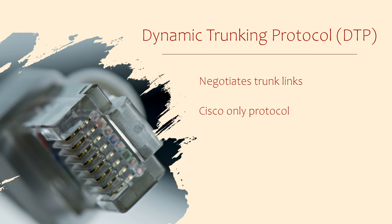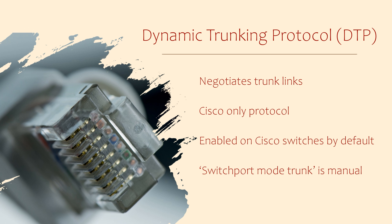Cisco provides an automatic option for configuring trunk links called Dynamic Trunking Protocol, or DTP. This is a Cisco-only option which is turned on by default. Earlier we used the command switchport mode trunk, which manually configures a trunk link. As long as this is configured on both ends of the link, the link will be a trunk.